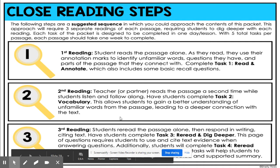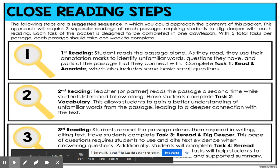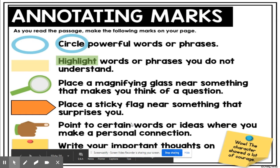Then you read it a third time. The third reading — you will reread the passage alone and respond to writing, citing specific text. Students complete task three, which is 'reread and dig deeper.' This page of questions requires students to use and cite specific text evidence when answering questions. Additionally, you will be completing task four and, at the end, writing a summary.